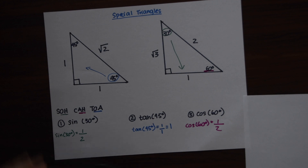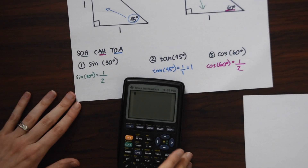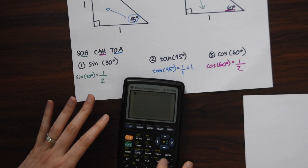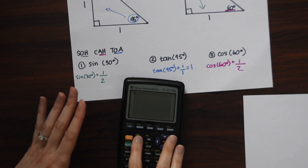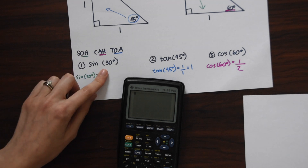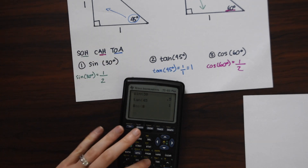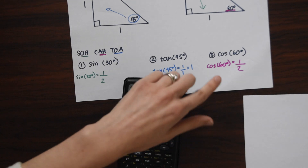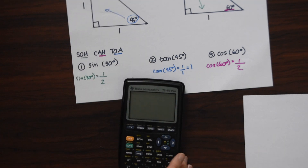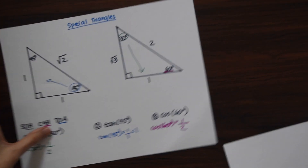Everything we're doing here you can also check on your calculator. Go to mode, make sure you're in degree mode, and then plug these in to check: sine of 30 equals one half, tan of 45 is 1, and cosine of 60 equals one half.